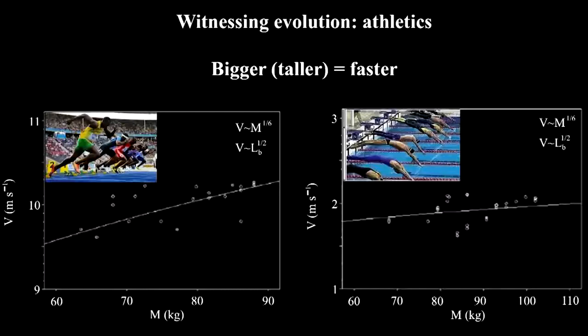We can witness animal evolution. In these two examples, it's the evolution of a special group called the fastest athletes — 100-meter sprint and 100-meter freestyle. Records go up, meaning speeds increase, but along the way the body masses of the winners increase. The relationship between the two is the same solid line as the one discovered earlier for all animals, runners and swimmers.